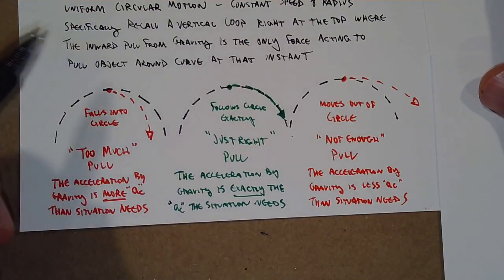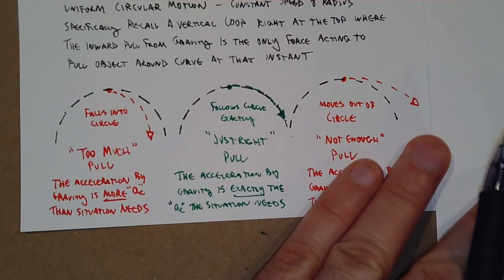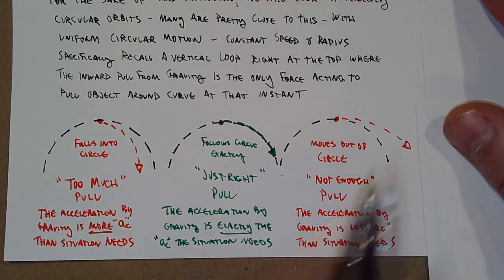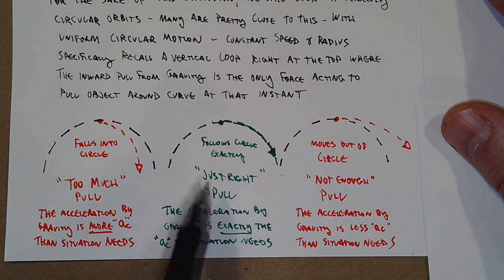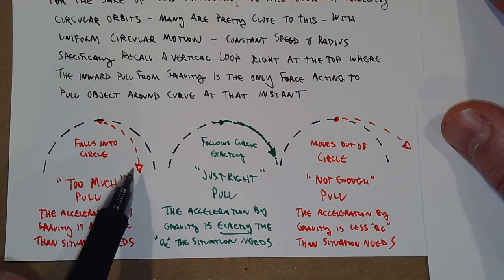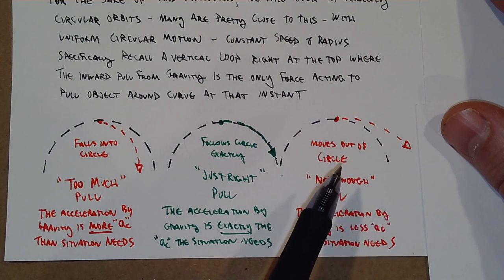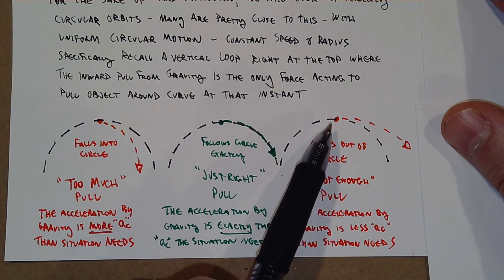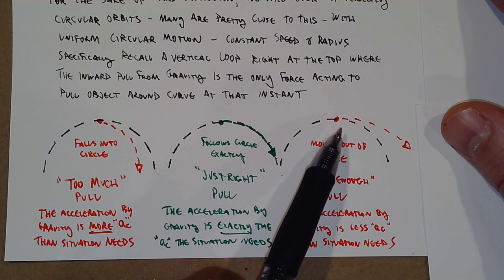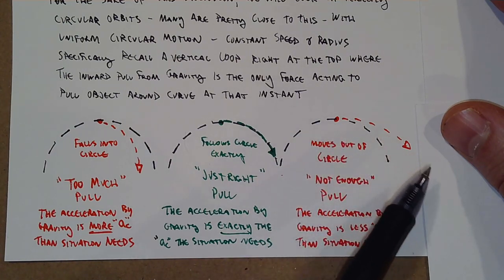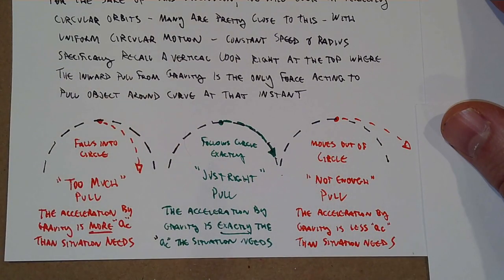These three situations are very relevant for an orbital scenario. You can have a satellite that orbits perfectly, a satellite whose orbit decays and moves closer to the object it's orbiting, or an object that moves further out. This can be intentional - there are times when we have satellites that get a boost, increase their speed, and move out to a further radius for practical reasons.